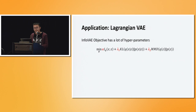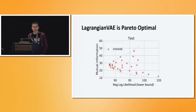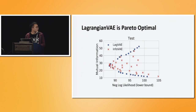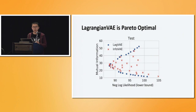We can apply this to existing objectives. For example, we apply it to info-VAE, which has many hyperparameters, and we can use Lagrangian optimization to automatically determine them. Lagrangian VAE is Pareto optimal. On the x-axis we show the negative log likelihood or a lower bound to it, and on the y-axis we show the mutual information. Each red dot corresponds to some hyperparameter choice of info-VAE, showing different trade-offs. With Lagrangian optimization, we are Pareto optimal: for whatever consistency constraint you set, we can always find the maximum or minimum mutual information solution depending on whether you want to maximize or minimize.